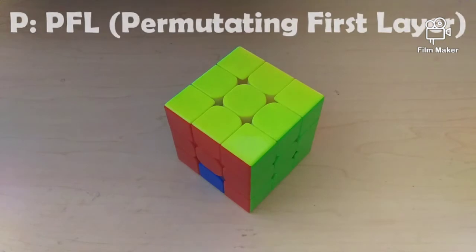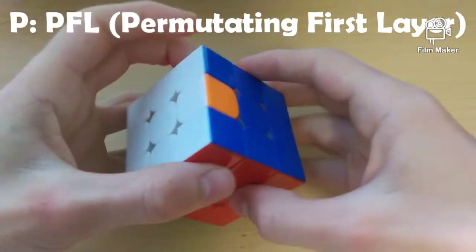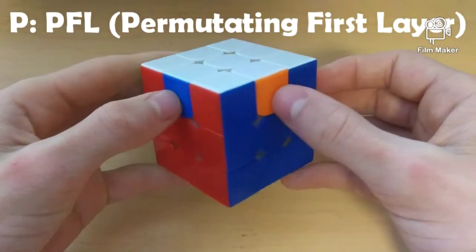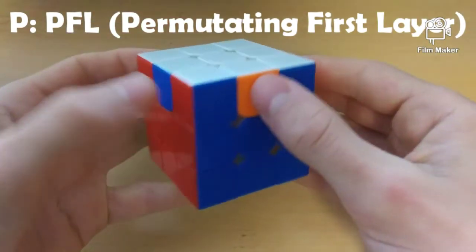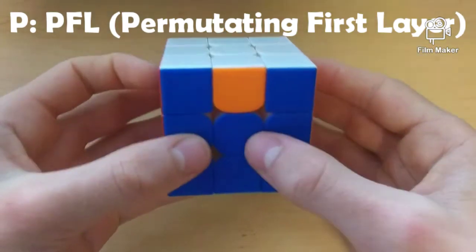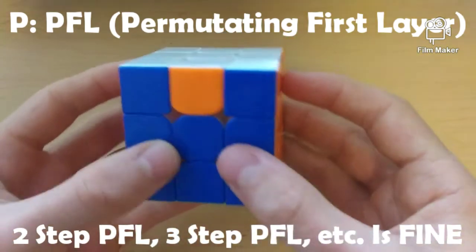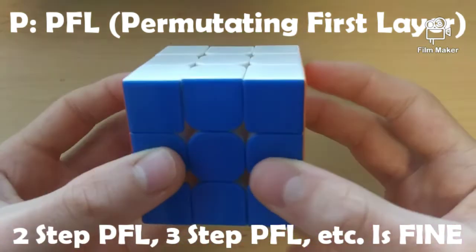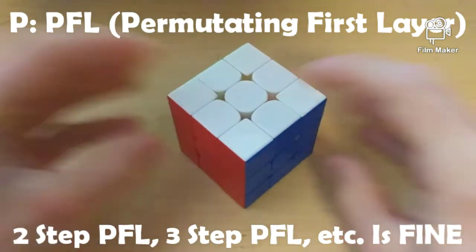And this step is PFL, or permutating the first layer. So, remember in the beginning when we didn't solve the cross correctly? Well, that's okay. Because now, in PFL, we will use just a normal PLL algorithm to solve this case. So, as you can see, this is a U perm. So, I am going to go ahead and solve that. And the cube is complete.